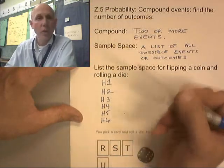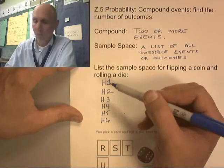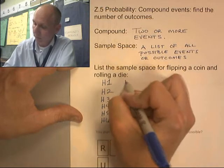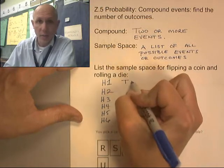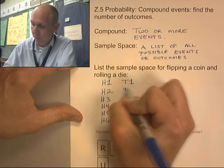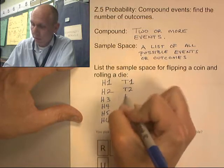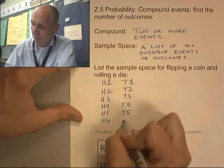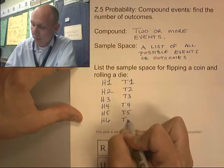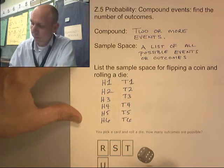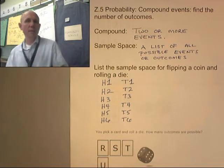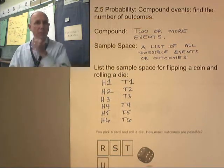Notice that I try to do this in a logical, orderly manner so my brain doesn't explode. I could have tails with one, tails with two, tails with three, tails with four, tails with five, tails with six. These are all the possible events. This is the sample space.